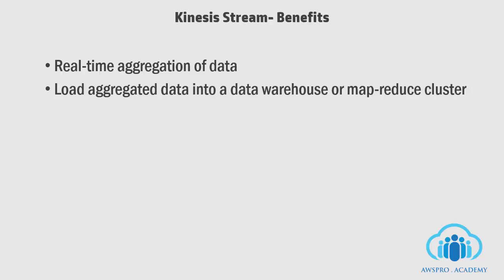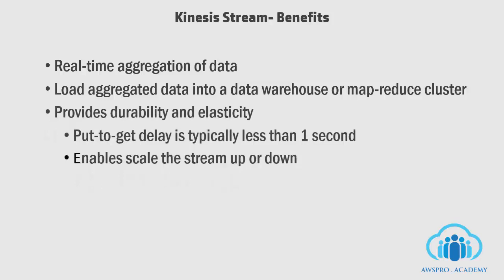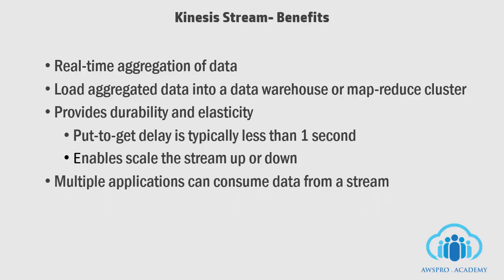Kinesis Streams support high durability and elasticity of the infrastructure. The delay between the time a record is put into a stream and the time it can be retrieved is typically less than one second, so Kinesis applications can start consuming data from the stream almost immediately after the data is added. The elastic nature of Kinesis Streams enables you to scale up or down so that you never lose data records prior to their expiration. Multiple Kinesis stream applications can consume data from a stream so that multiple actions can take place concurrently and independently. For example, two applications can read from the same stream — the first can watermark images while the second compresses, archives and uploads them to S3.